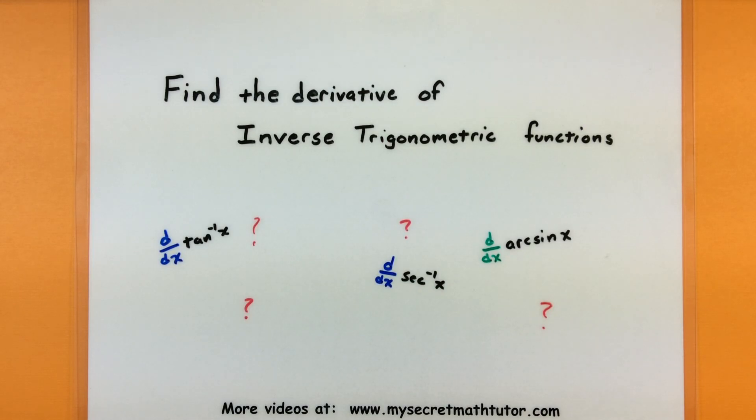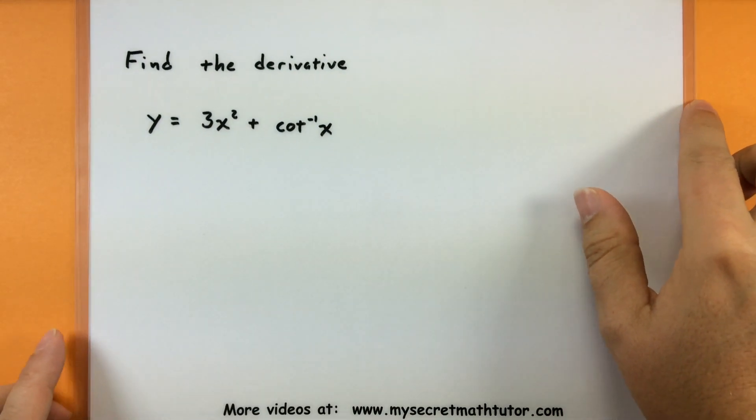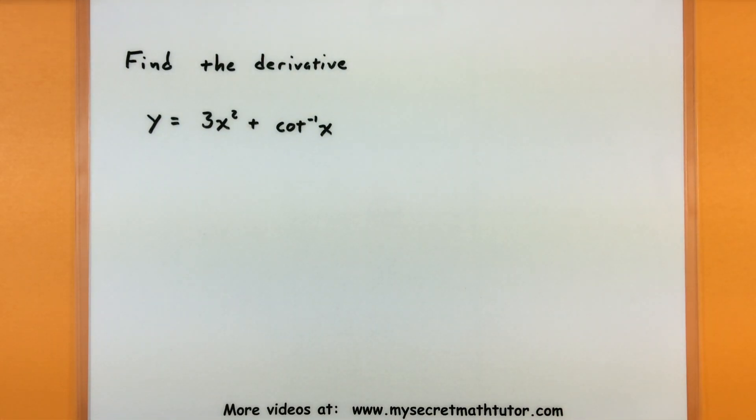Now I'm going to jump into an example of these just to give you a sense that these don't quite look like other derivatives that you're used to. So I'm going to do a problem like this: y equals 3x squared plus the inverse cotangent of x, just to see what we're up against.